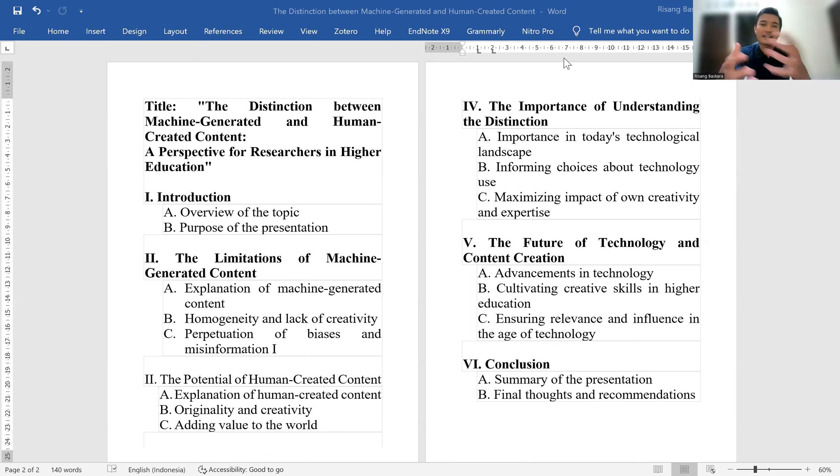In conclusion, while technology has the capability to generate content, it cannot replace the creativity and originality that humans bring to content creation. As researchers and academicians, it is vital to understand the distinction between machine-generated and human-created content and to employ technology in a way that leverages our own strengths and maximizes its potential.